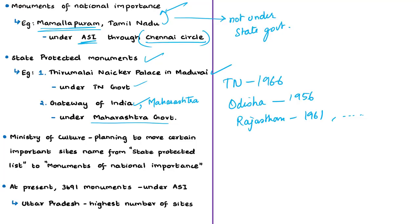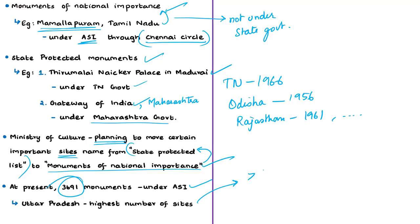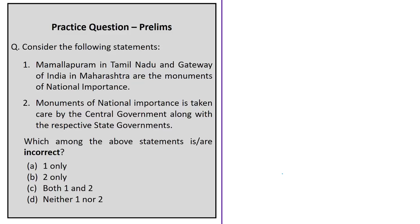Today's news is that the Union Ministry of Culture is planning to move important sites from the state protected list to the monuments of national importance list. There is also a possibility of moving certain central list sites to the state list. At present around 3,691 monuments are protected by ASI across the country, with the highest number in Uttar Pradesh — more than 740 monuments. There has been no previous instance of a state protected monument being taken up for central protection, and there has been no substantial increase in the centrally protected monuments list in many years.